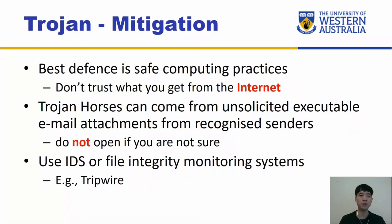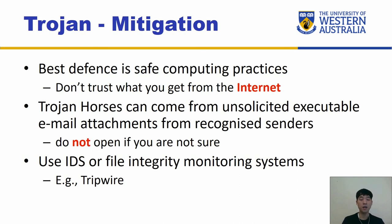So how do you mitigate Trojans? The best defense is safe computing practices — don't trust what you get from the internet. Trojan horses can also come from unsolicited executable email attachments from recognized senders, since email spoofing is very easy to do. Use IDS or file integrity monitoring systems — IDS stands for intrusion detection systems, which we'll cover in later videos. Tripwire is one example.